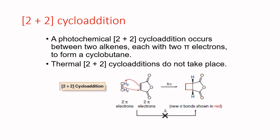If we try to do a 2+2 cycloaddition under thermal conditions, it cannot proceed. Looking at the example: we have 2 pi electrons reacting with another 2 pi electrons. A new sigma bond forms and the double bonds become single bonds, because the product of cycloaddition contains 2 fewer pi bonds than the starting materials. New sigma bonds are highlighted in yellow. This reaction will not proceed under thermal conditions — only photochemical conditions can produce this product.